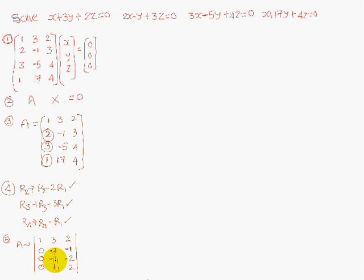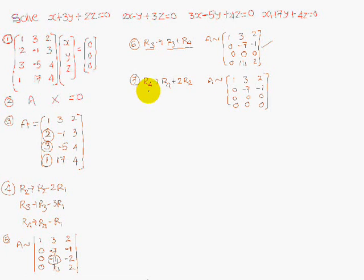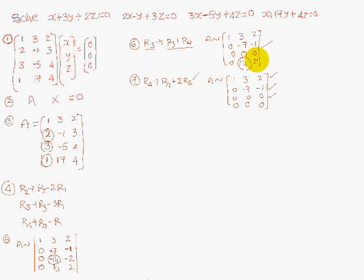Next, to continue the echelon form, apply R3 → R3 plus R4 to make the leading element zero. Then apply R4 → R4 plus 2 times R2 to make the element 14 become zero, since 14 plus 4 minus 14 equals 0 and 2 minus 2 equals 0. The matrix is now fully reduced.